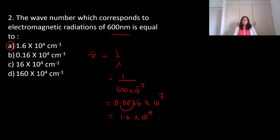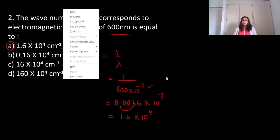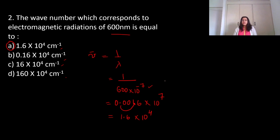Question number 2: The wave number which corresponds to electromagnetic radiation of 600 nanometers is equal to 1 upon lambda, which is 1 upon 600 into 10 raised to power minus 7. Why minus 7? Because all the values are in centimeters. 1 nanometer equals 10 raised to power minus 9 meters or 10 raised to power minus 7 centimeters. This gives 1.6 into 10 raised to power 4 per centimeter. This is your answer.